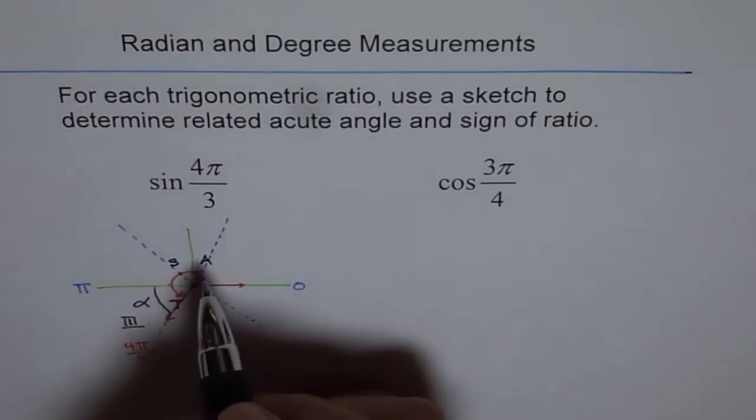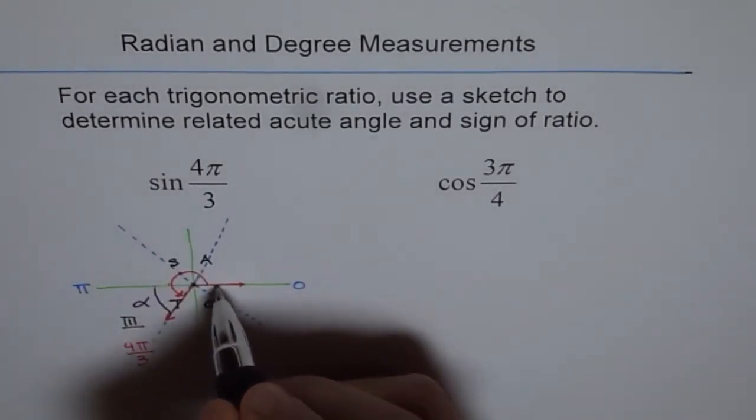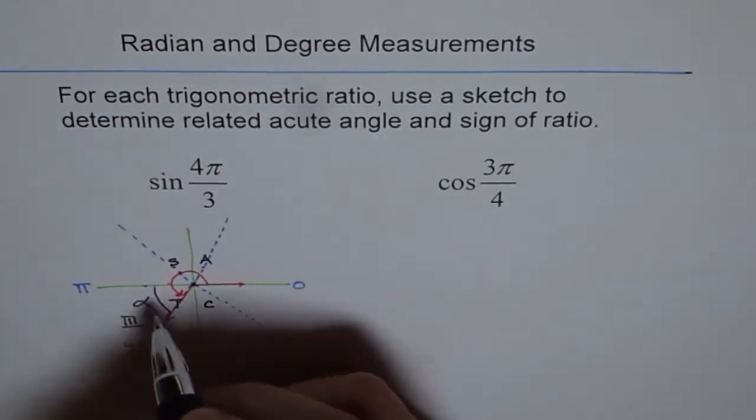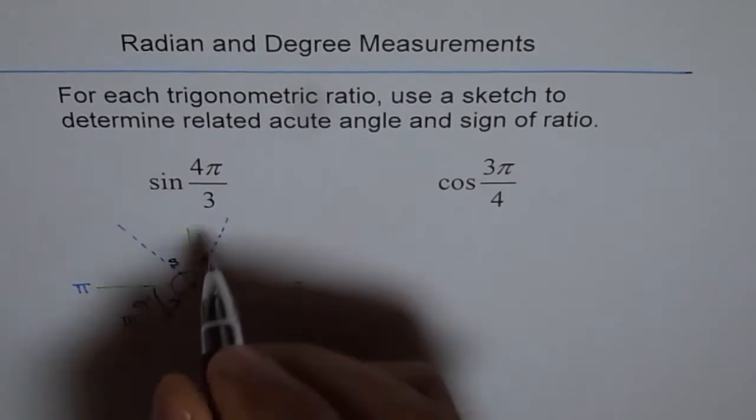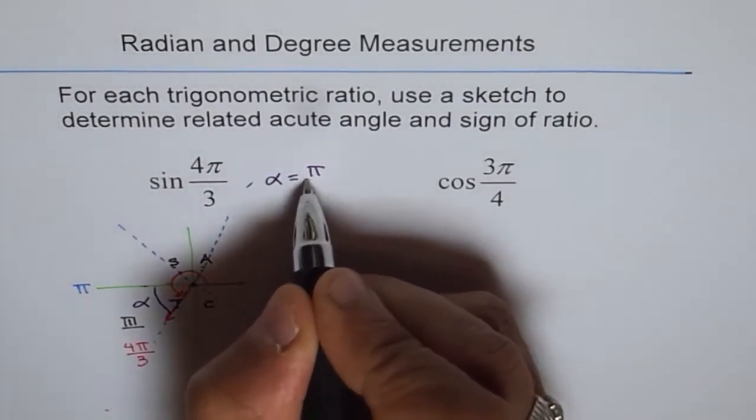Now, how much should that be? So this is 1π by 3, 2π by 3, 3π by 3 and 4. So this is π by 3. So this alpha, related acute angle alpha is π by 3.